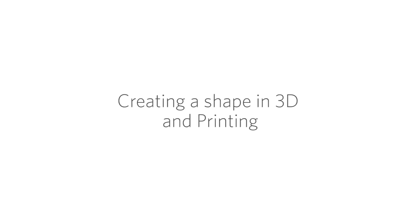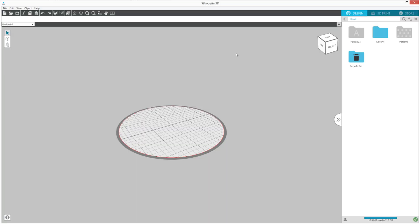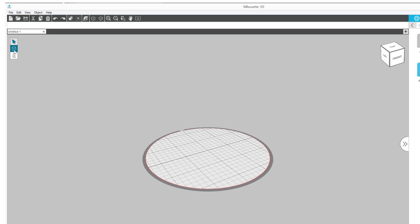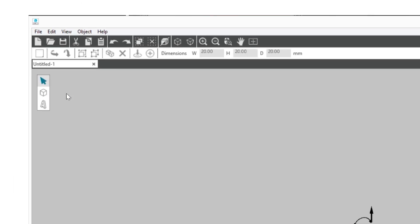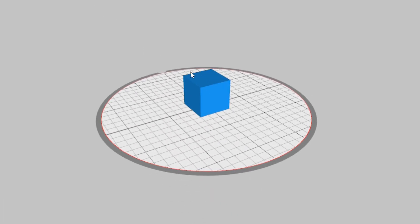Create a shape in 3D and Printing. Next, create a shape to test print in the Design tab of Silhouette 3D. Click on the Shape tool and select the cube. A cube will be placed in the print area.